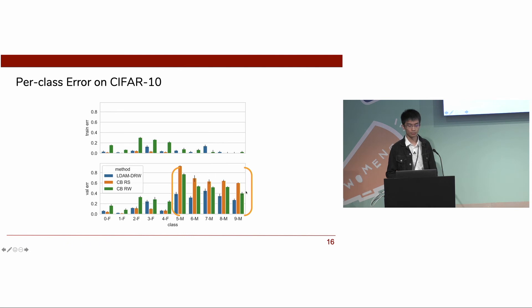To better understand the improvement of our algorithms, we showed per-class error of different methods. Our proposed algorithm exhibits great generalization on minority classes while keeping the performance on the frequent classes almost unaffected. This suggests that we succeeded in regularizing minority classes more strongly.